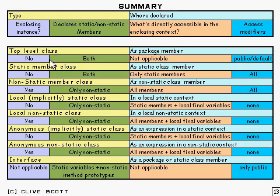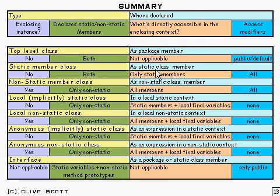So you can see top-level classes — it's fairly obvious what you can do there. Static member classes don't have an enclosing instance required. They can declare both static and non-static members. They're declared as a static class member, with the keyword static. What's directly accessible? Only static members from any enclosing classes can be accessed. And all access modifiers are permitted.